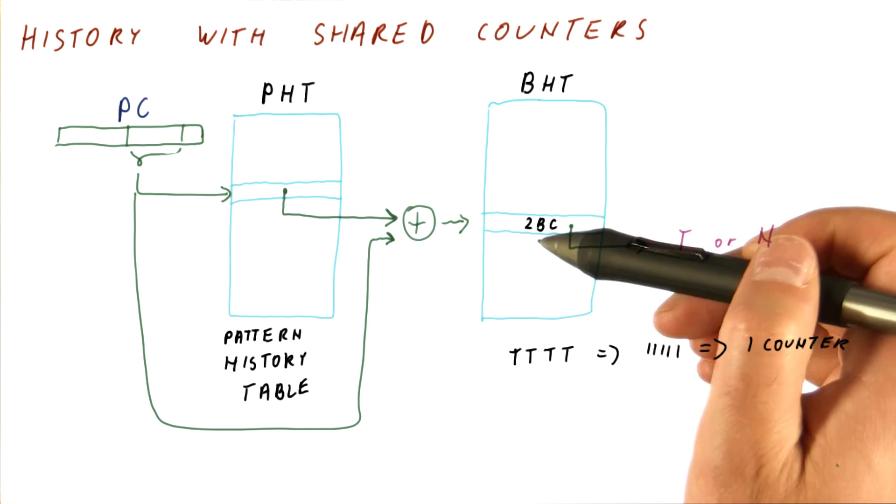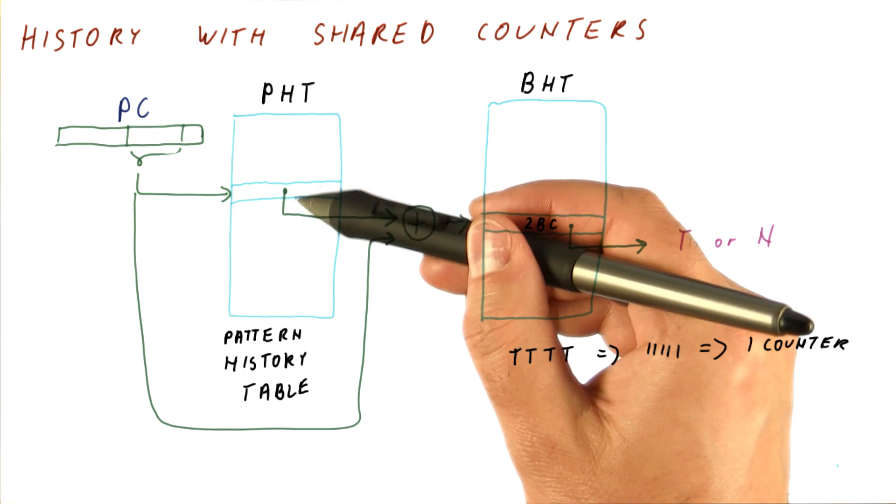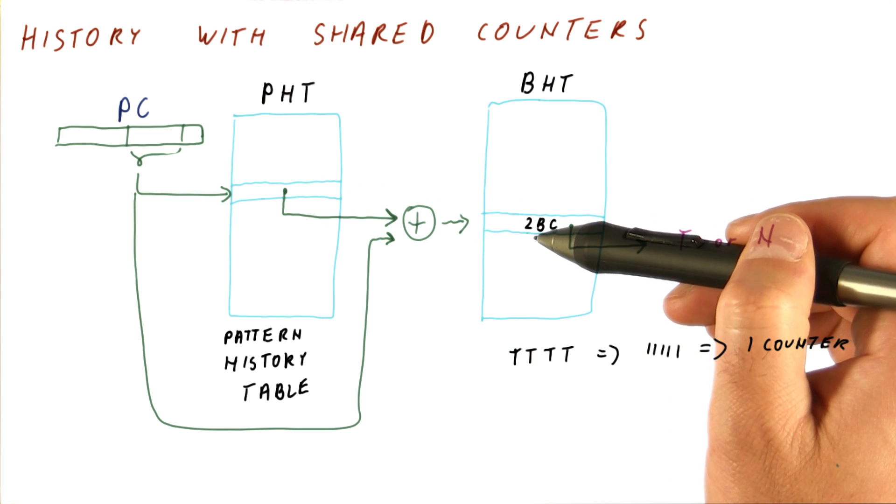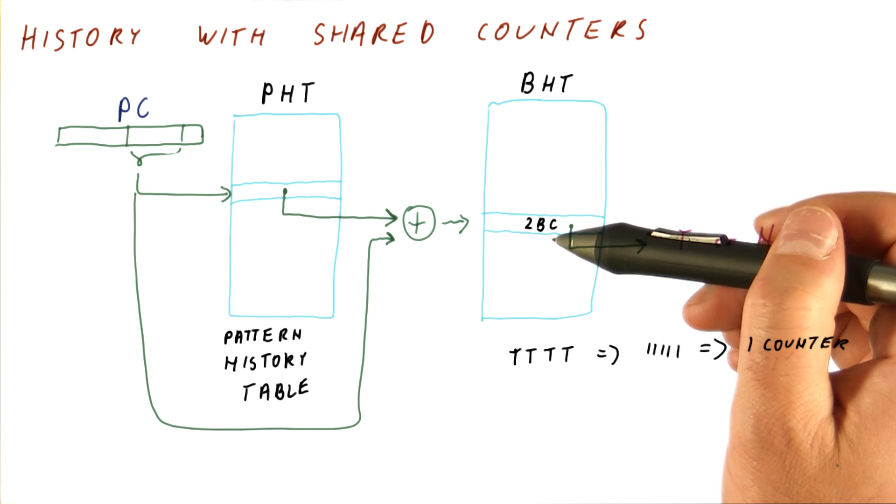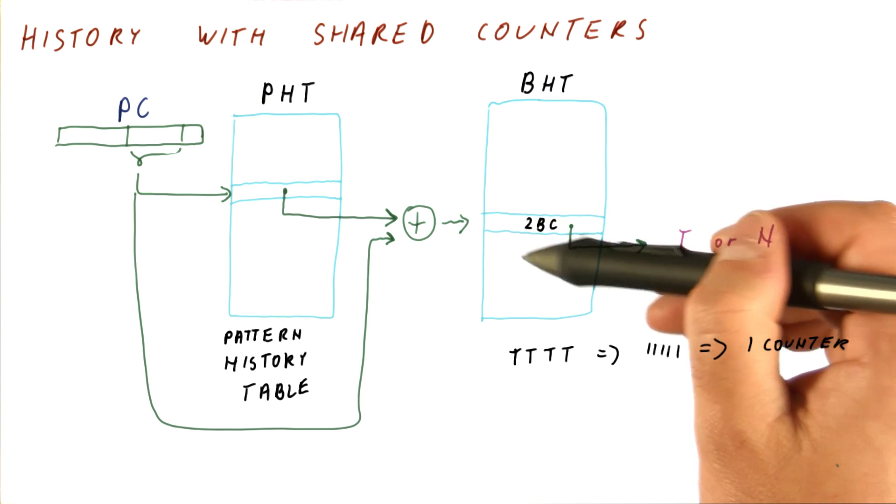So the cost is not just two bits, it's really 11 or 16 bits plus two. But it's much less than a long history plus 2^n times a two-bit counter.